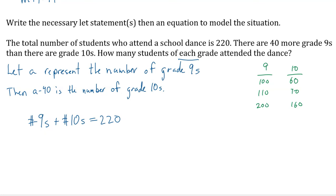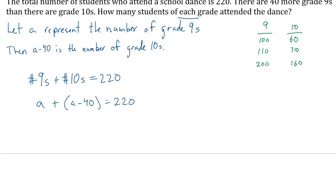What's the number of grade nines? No. Isn't it A? That's why it's a bit of a trick question. What's the number of grade tens? 40 fewer. So A minus 40. That's what our let statements tell us.